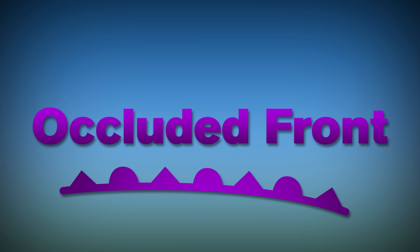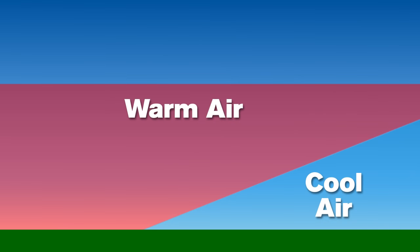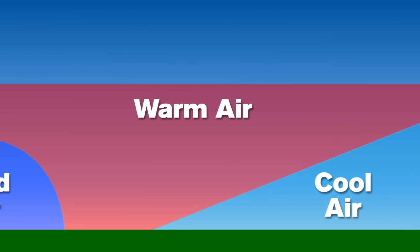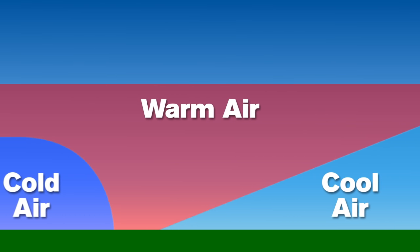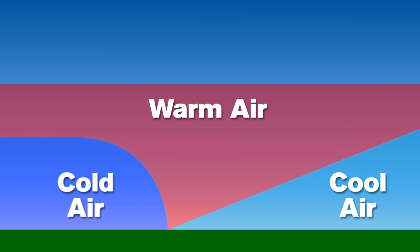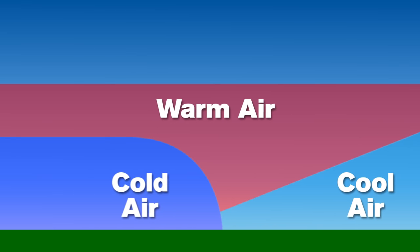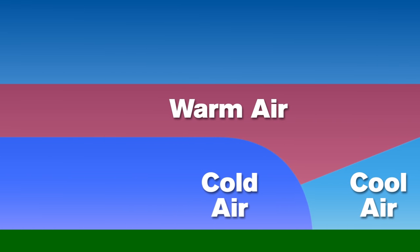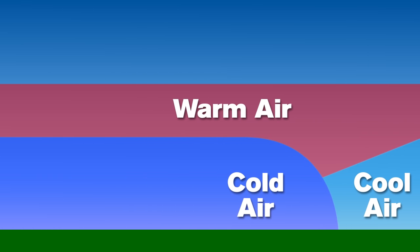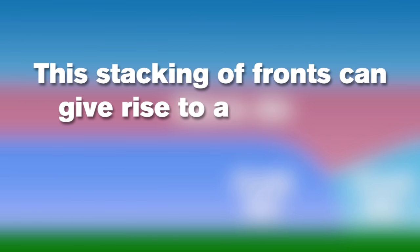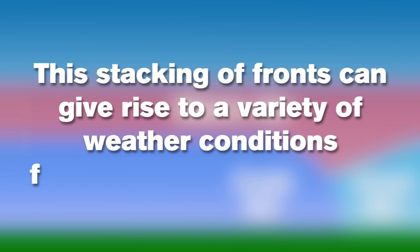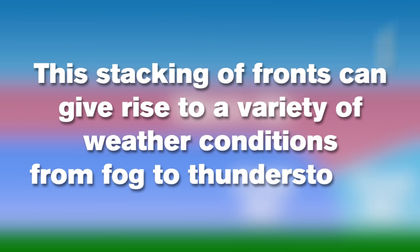The last type of front is called an occluded front. Occluded fronts form when a fast-moving cold front catches up to a slower-moving warm front. The cold front will then lift up the warm front and eventually interact with the air that is in front of the warm front. The stacking of fronts can give rise to a variety of weather conditions from fog to thunderstorms.